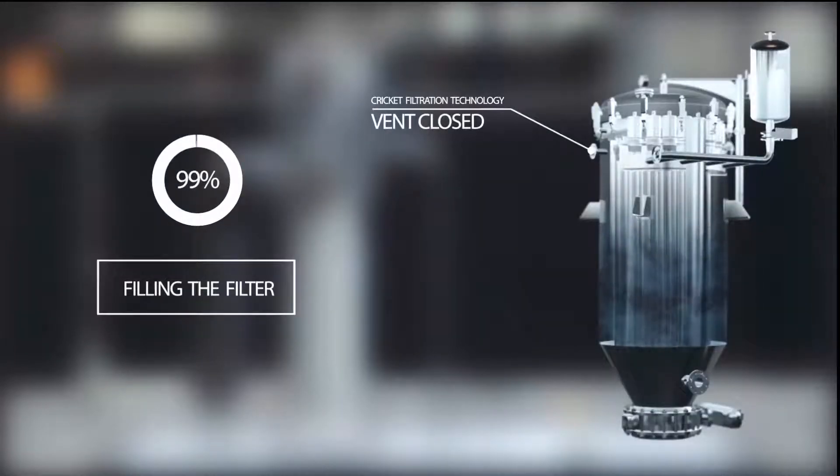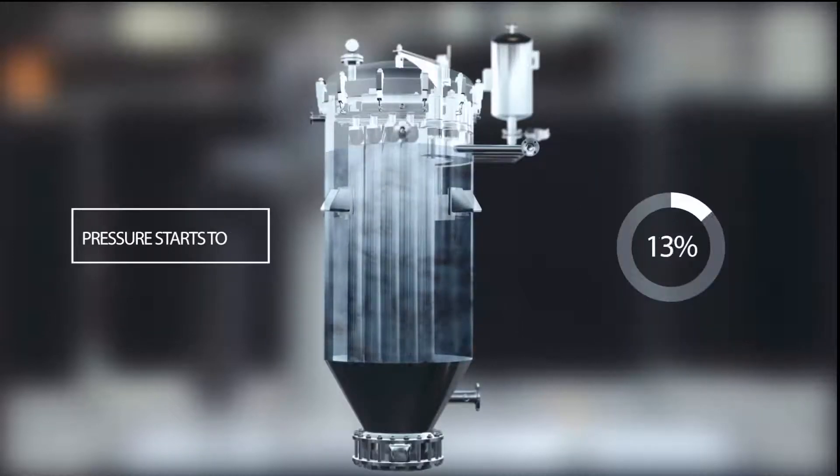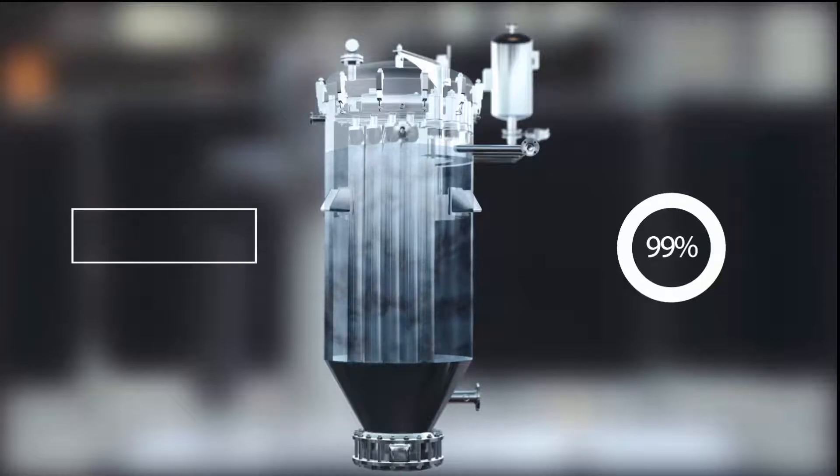The cricket filtration process is a batch process based on cake filtration and is fully automated. By using two or more filters, a continuous feed stream can be processed.